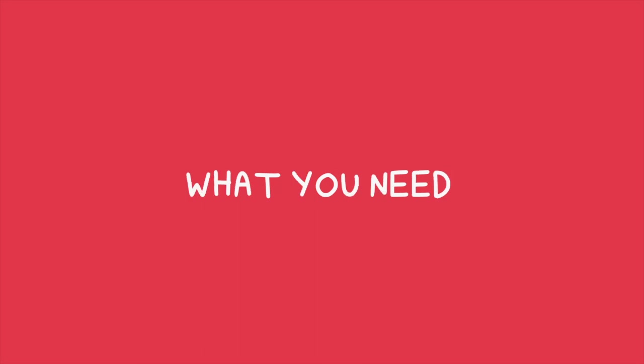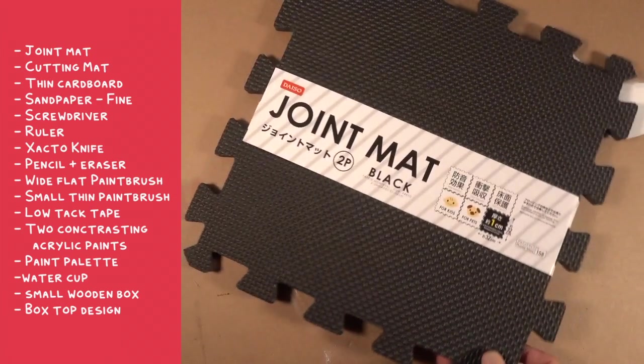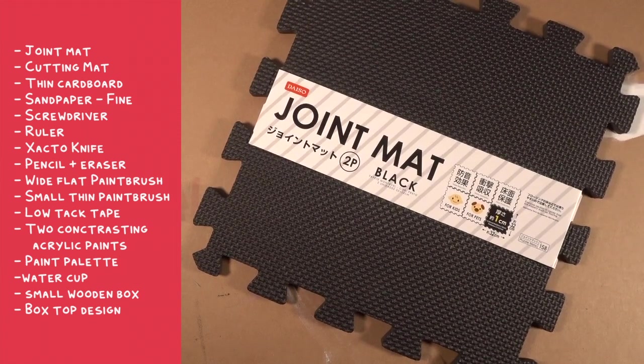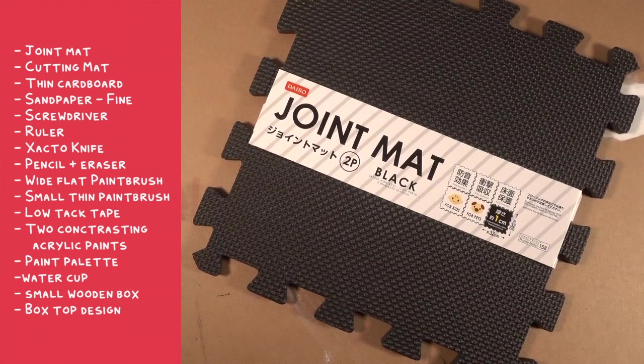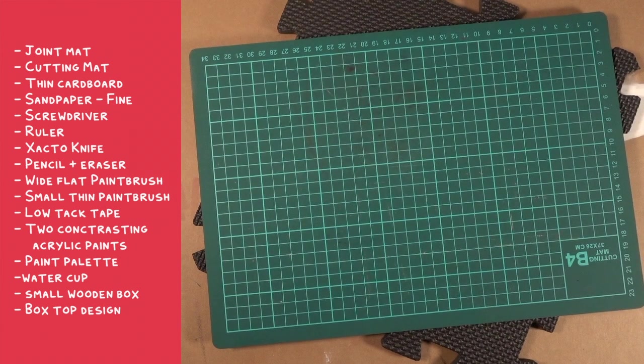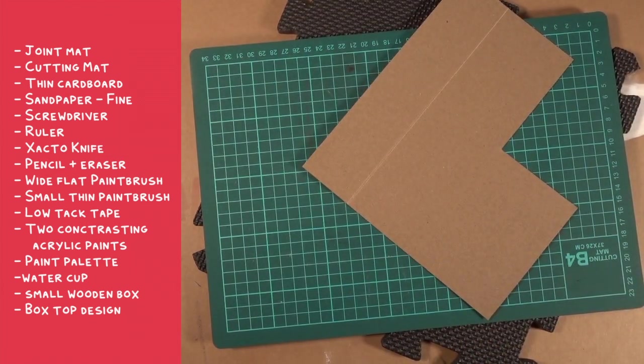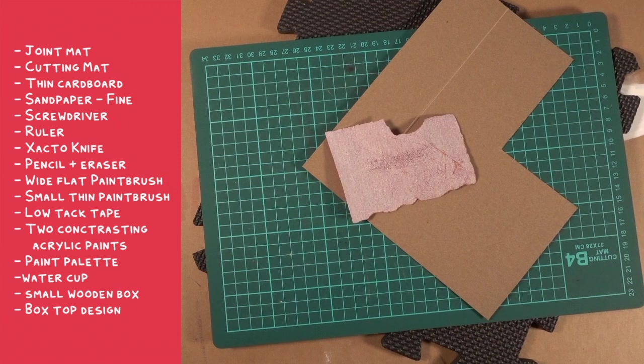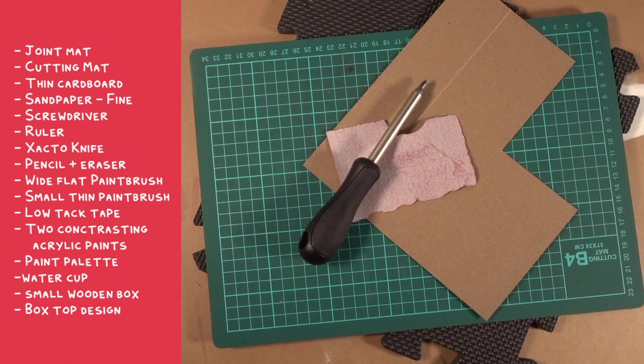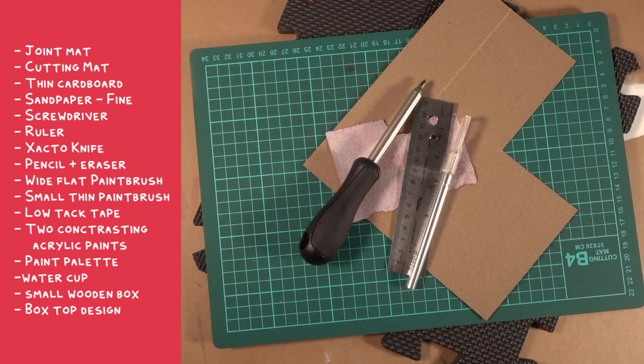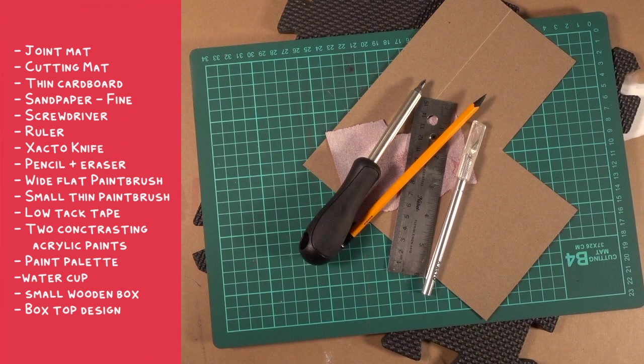So here's what you'll need to make this. A joint mat, also known as a foam mat, also known as EVA foam. A cutting mat, some thin cardboard. I just used a part of a cereal box that I took from my recycling. Some fine grit sandpaper, a screwdriver, a ruler, an exacto knife, and a pencil and eraser.